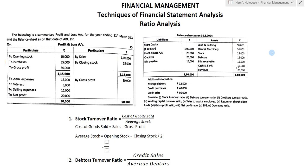In my last lecture, I explained example number one of ratio analysis. This is the second example of ratio analysis. The question gives a summarized profit and loss account for the year ending 31st March 2024 and the balance sheet as on date of ABC Limited. They have also given us additional information.